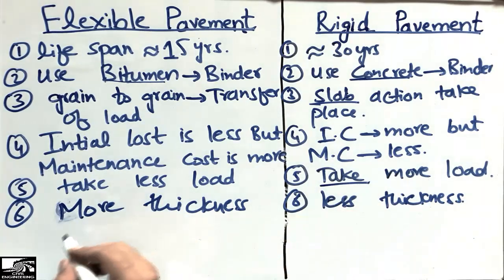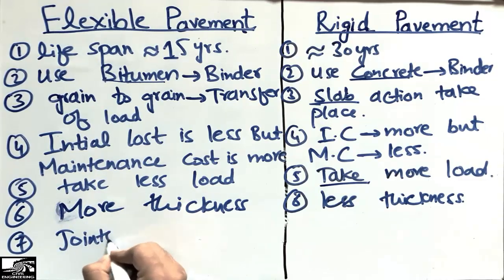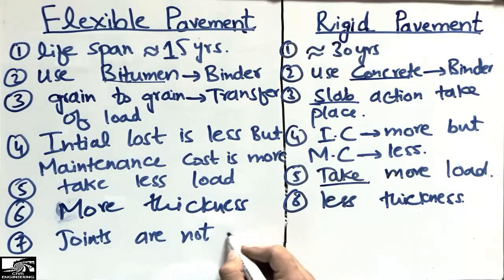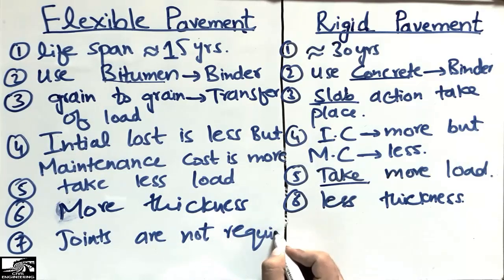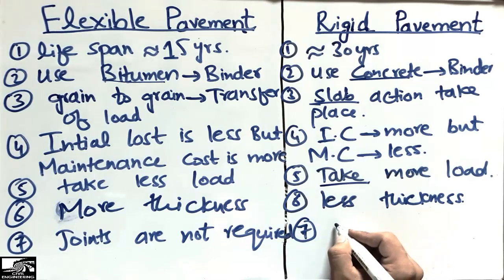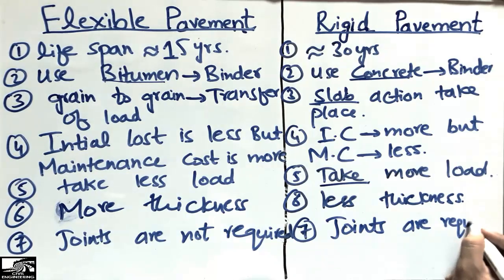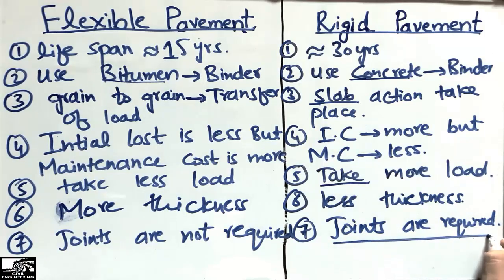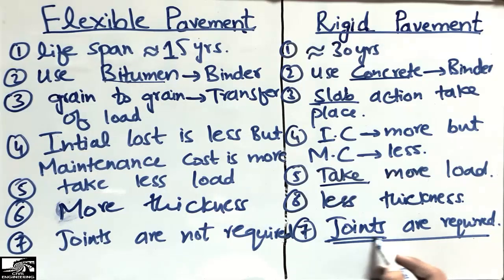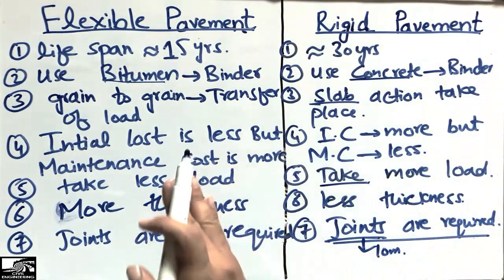Another difference is that no joints are required in flexible pavement, while in rigid pavement you must provide joints. These joints are usually provided at a distance of 5 to 10 meters. Expansion joints are mostly used in rigid pavements and are provided throughout the pavement at those intervals.